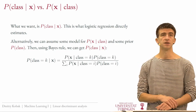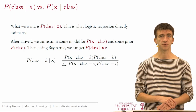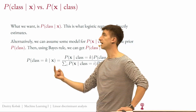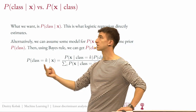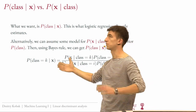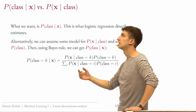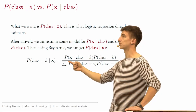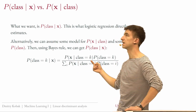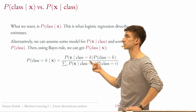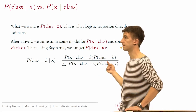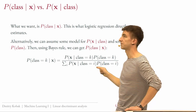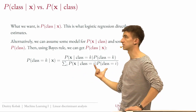Here's how it works. By Bayes' theorem, the probability that a sample x belongs to class k equals the probability to observe x given class k, times the prior probability of class k, divided by a normalization factor that sums the same term over all possible classes.